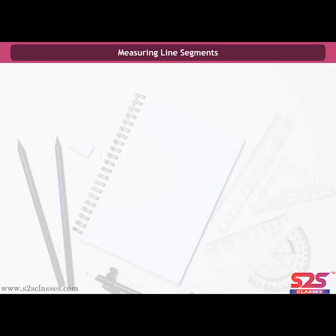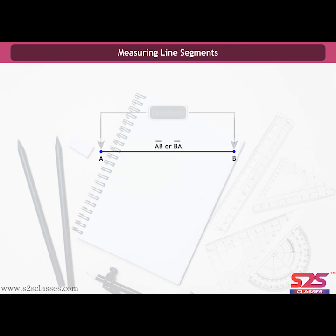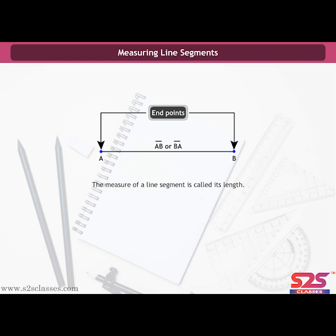Measuring Line Segments. In the earlier chapters, we have already studied about the line segment. It is a fixed portion of a line, hence it is possible to measure it. The measure of the line segment is called its length. Using this idea, we can compare line segments. We have different methods for comparing line segments.